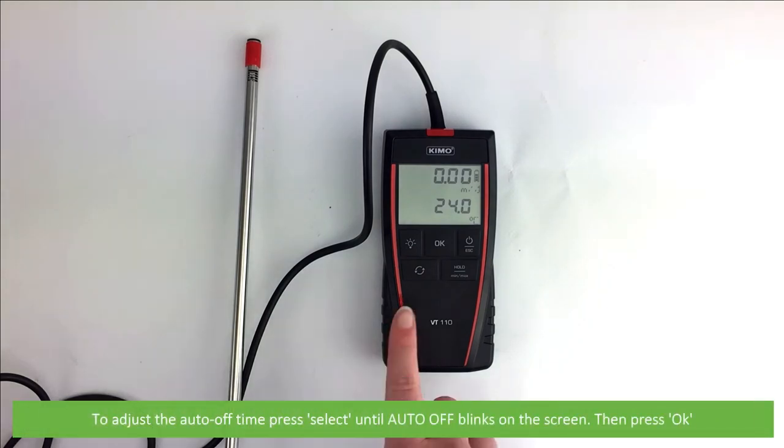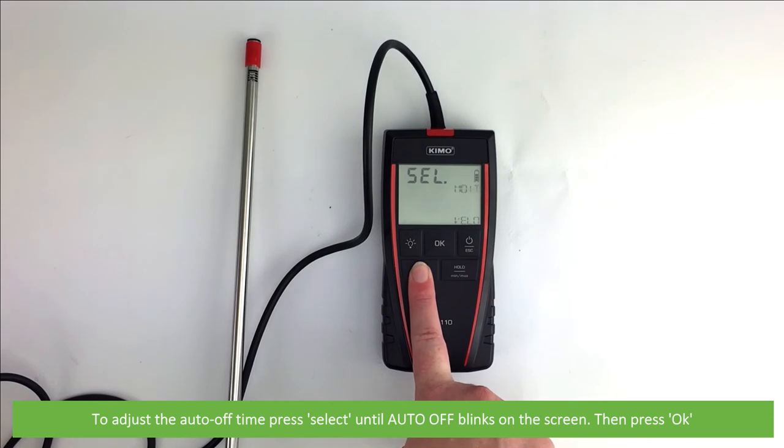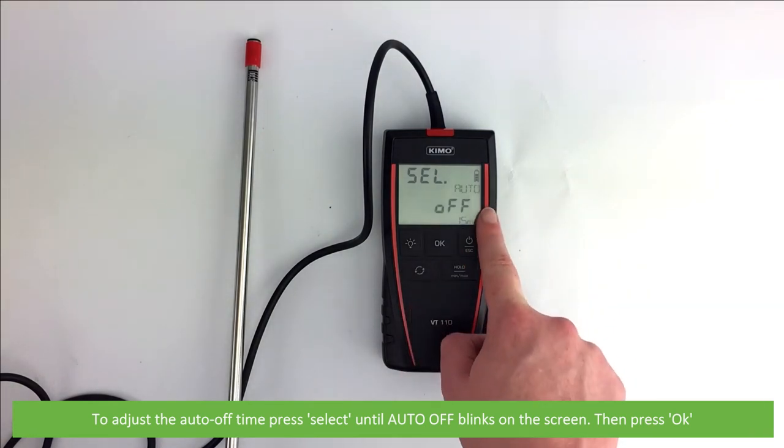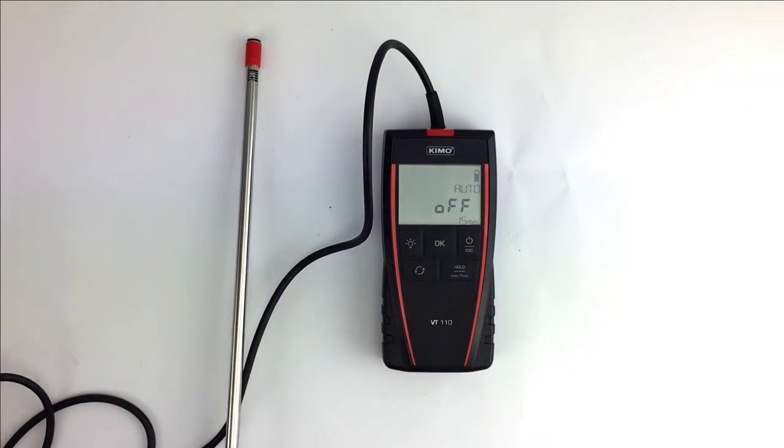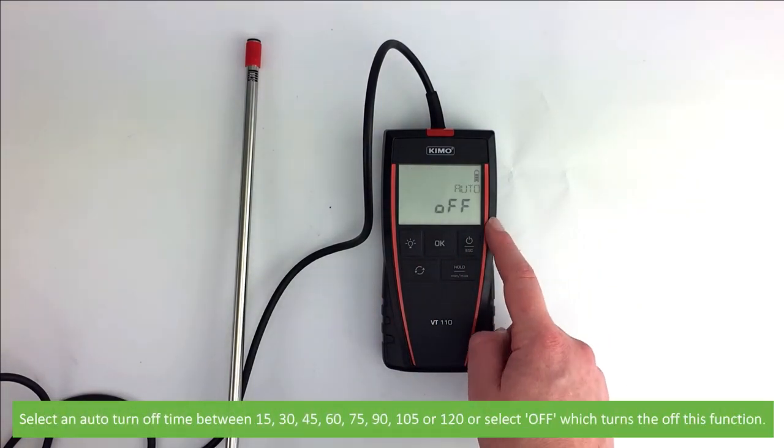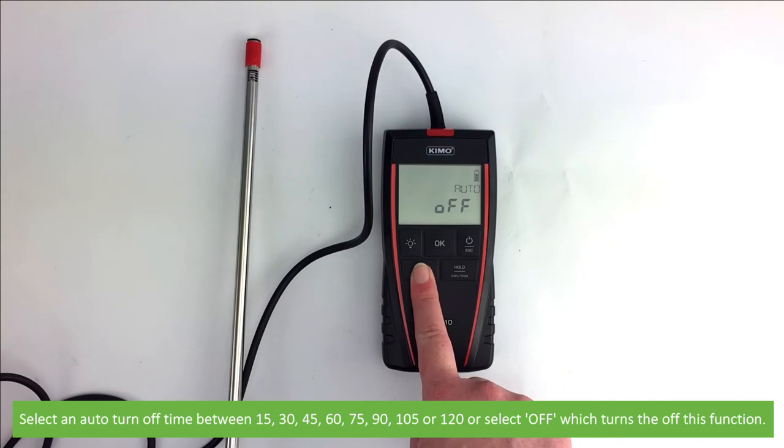To adjust the auto off time, press select until auto off blinks on the screen. Then press OK. Select an auto off time between 15, 30,